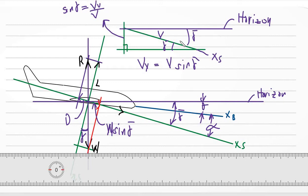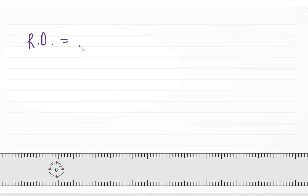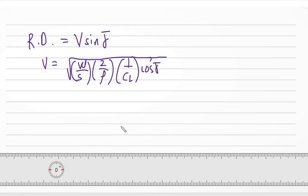Since our velocity is pointing down to the right, the vertical component is downward — this is our rate of descent. So rate of descent R-sub-D equals v sine gamma-bar. Using our velocity formula in terms of C-sub-L: v equals the square root of (W/S) times (2/rho) times (1/C-sub-L) times cosine gamma-bar. Substituting into R-sub-D gives the square root of (W/S times 2/rho times 1/C-sub-L times cosine gamma-bar) multiplied by sine gamma-bar.